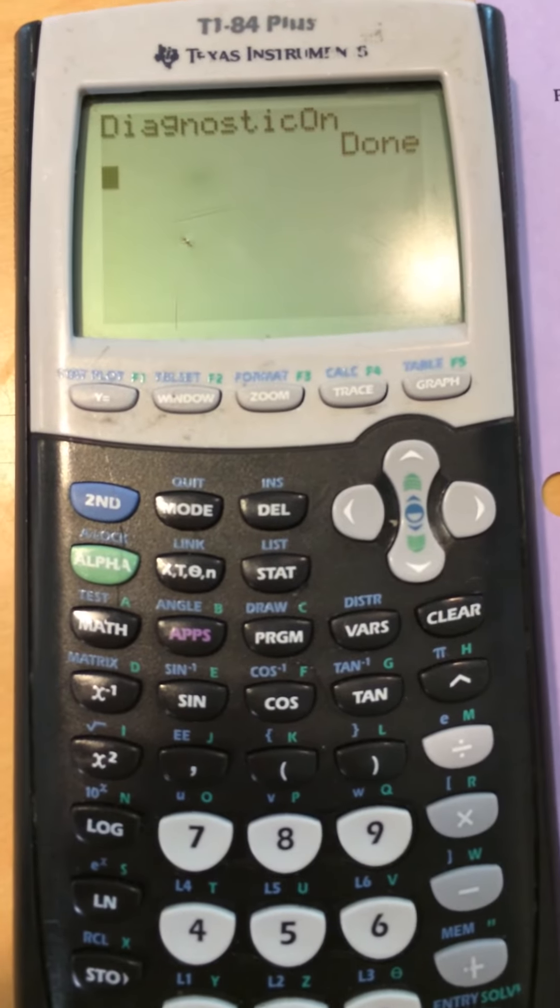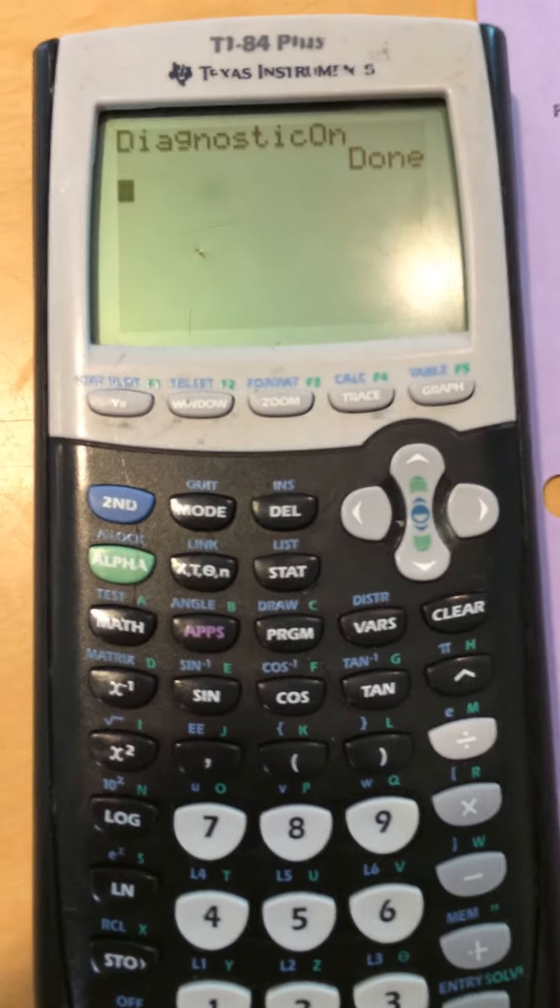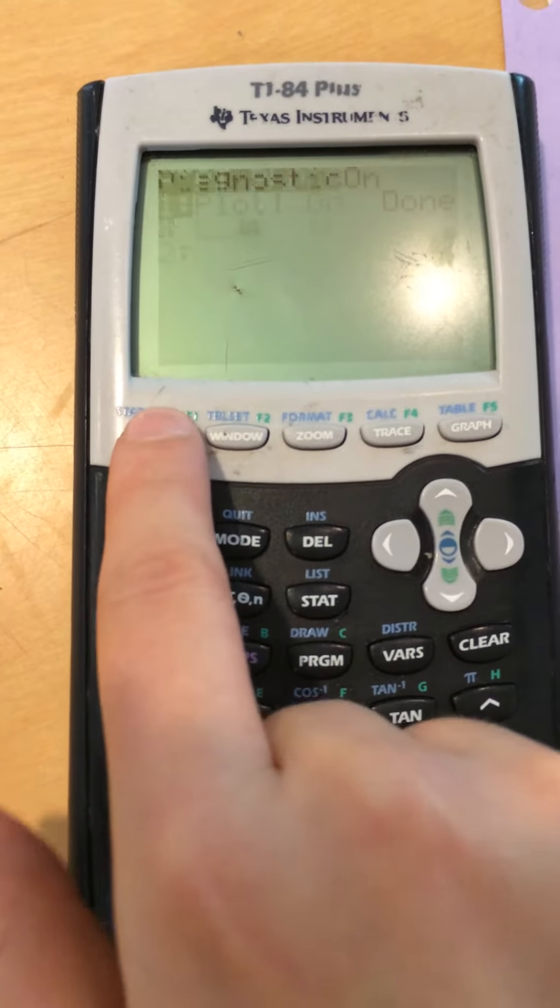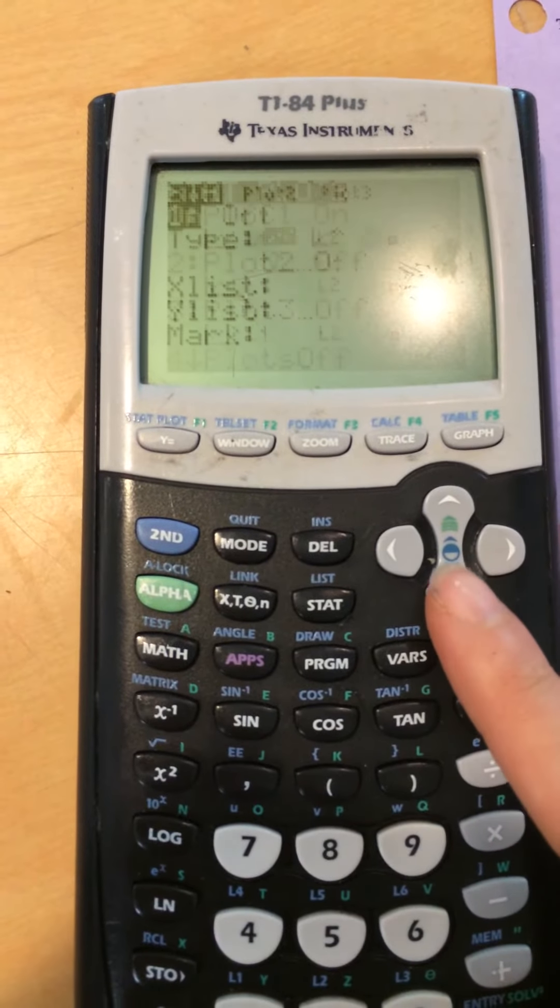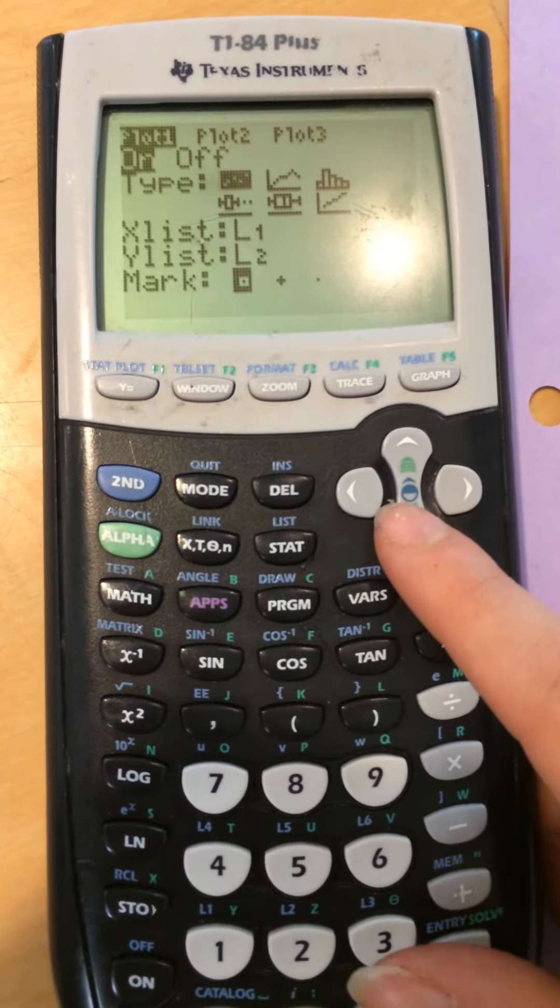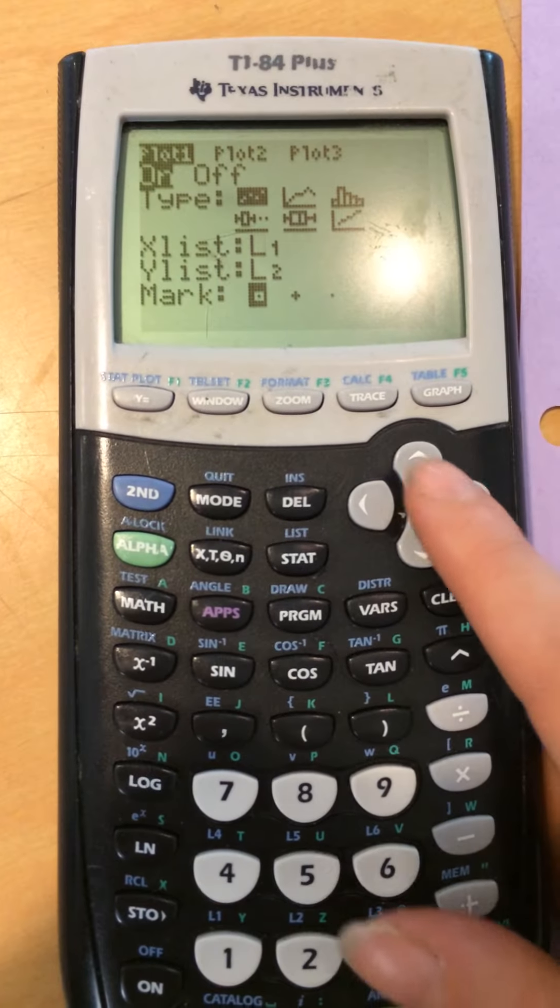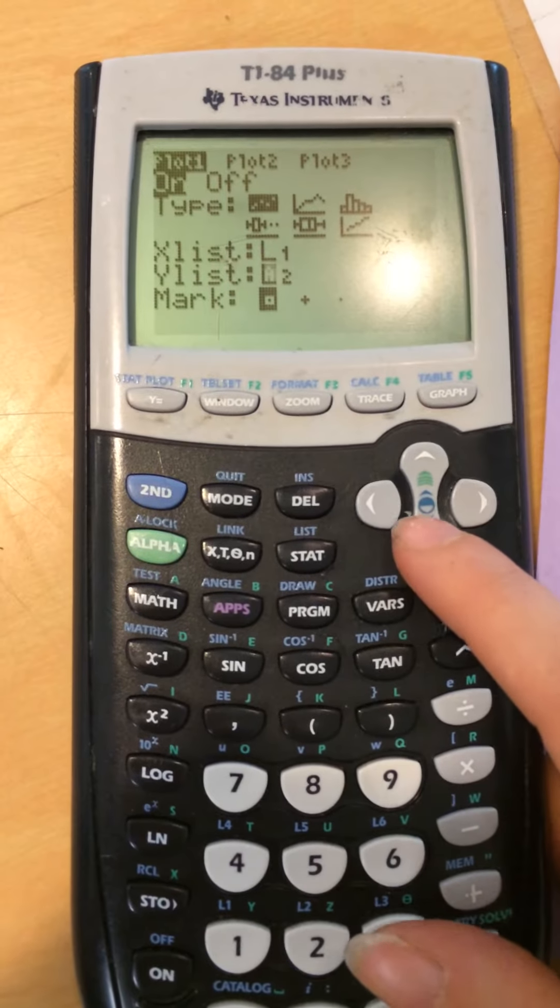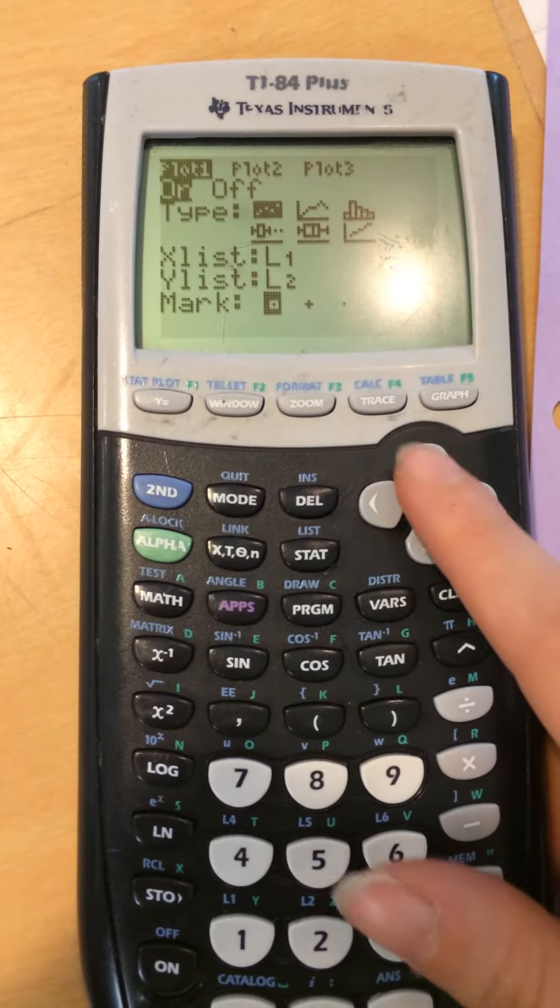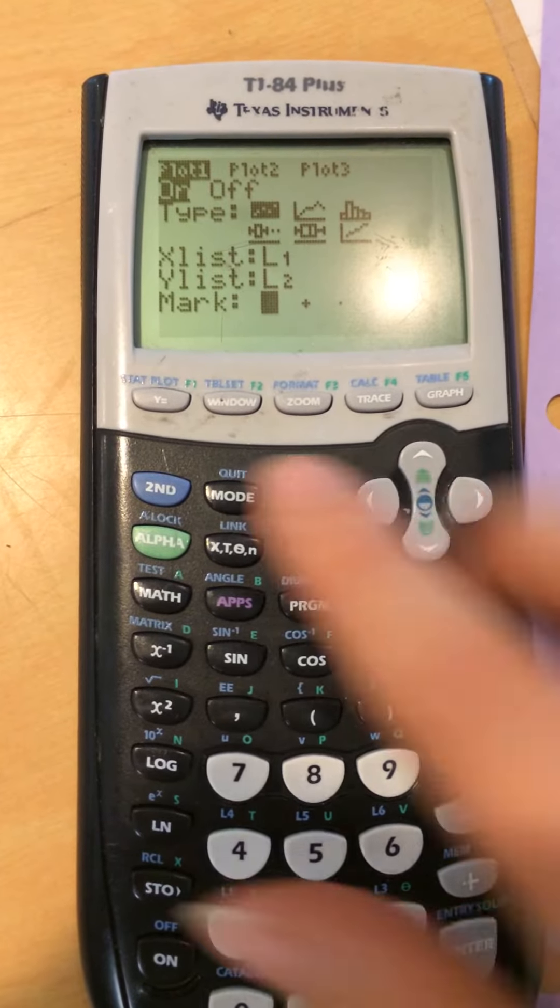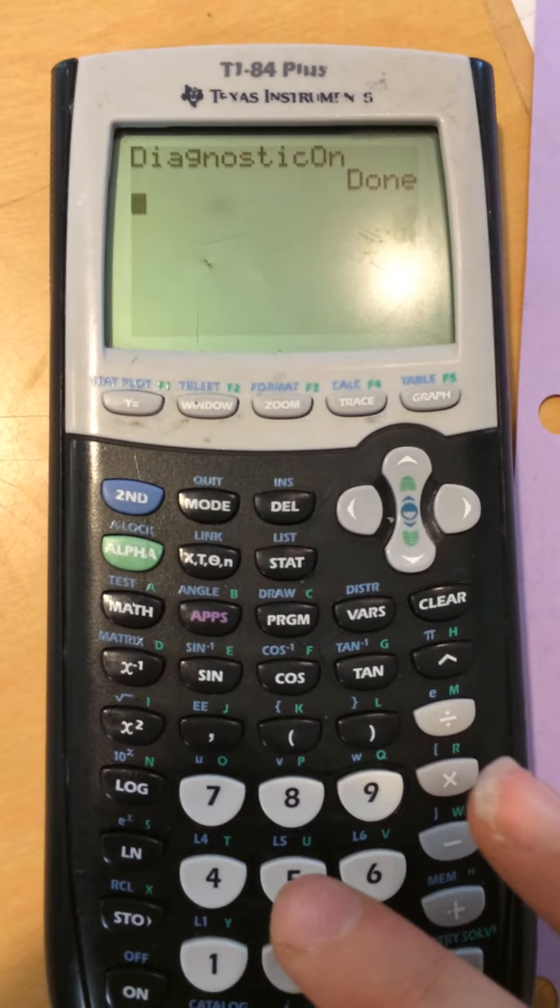The next step we need to do is turn the stat plot on. So go to second, y equals. That's where stat plot is. Mine's already on, but you just click on it and you're going to switch from off to on. You want it to be a scatter plot as opposed to box and whisker. Make sure your x list is L1 and L2, or whatever lists you're going to use. We're going to use L1 and L2. You can just quit out of there. Now we actually want to input the data.